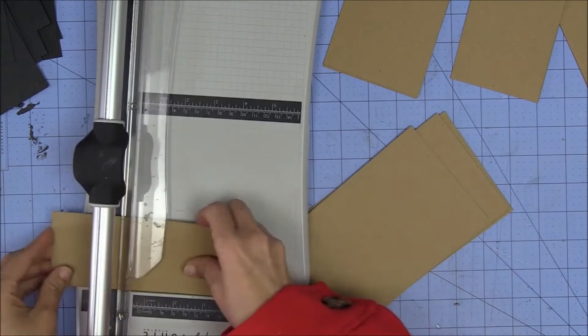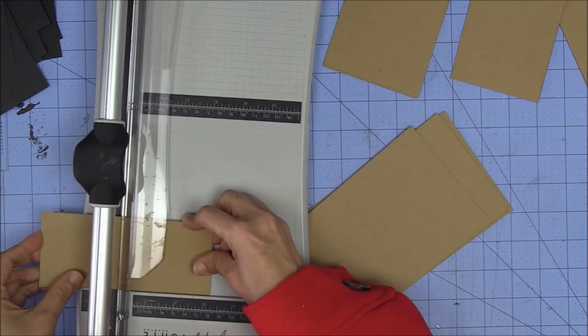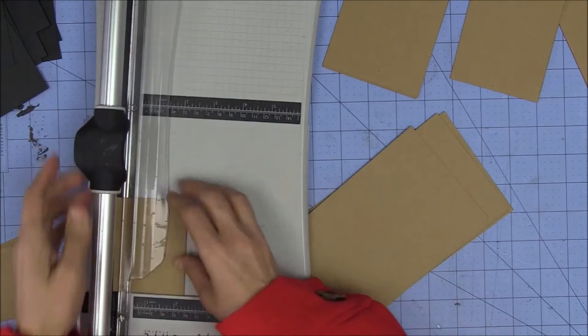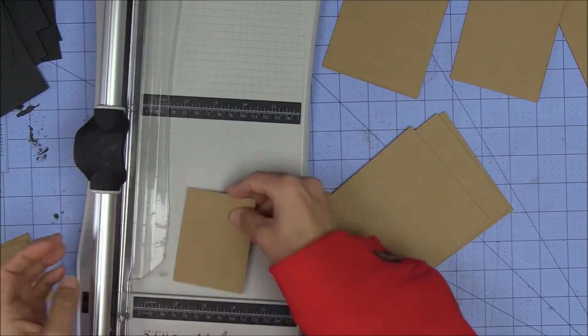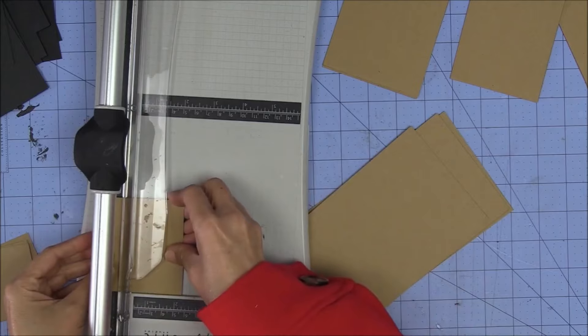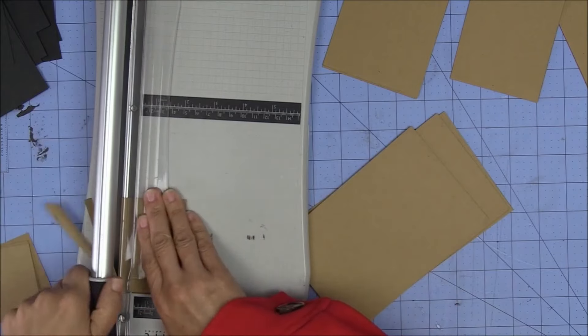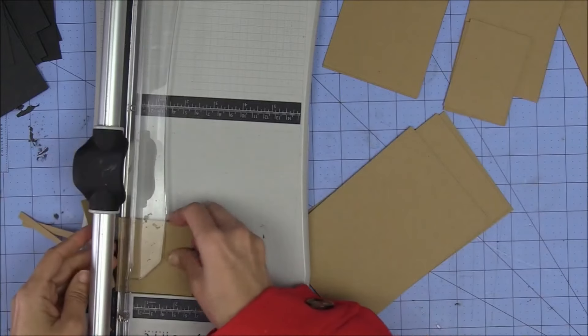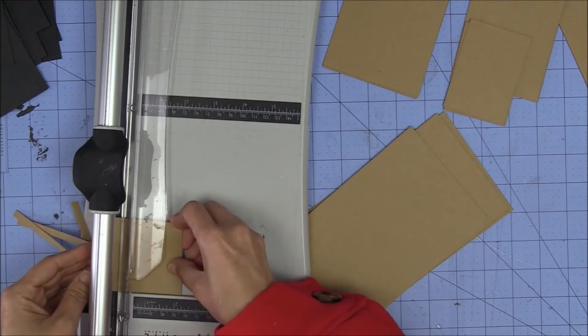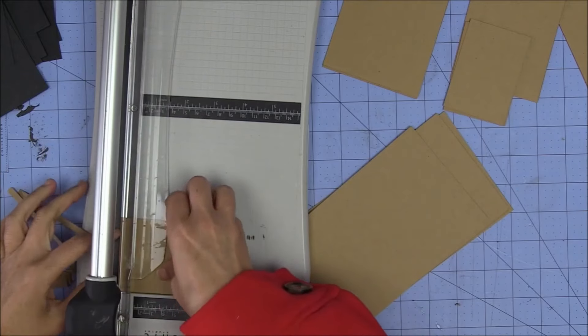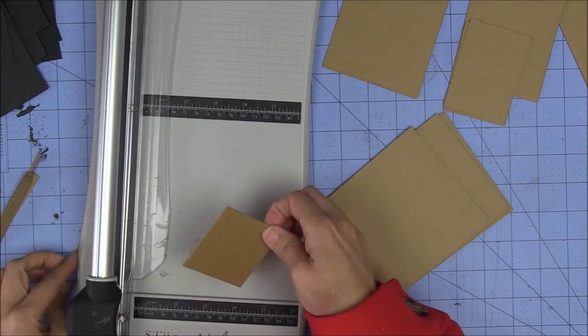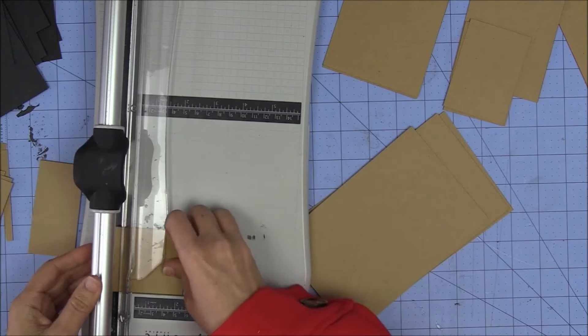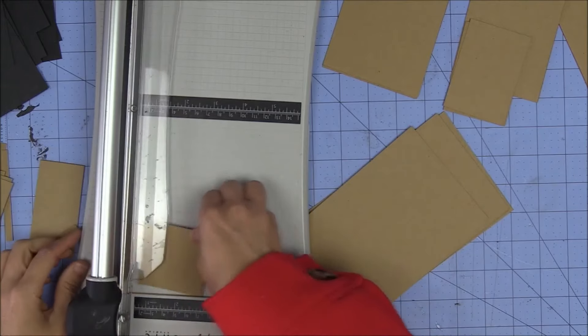This piece I'll cut down to 3 and a quarter by 2 and a quarter. And then this piece I'll cut at 3 and a quarter by 2 and a quarter. And you are left with nothing. Look at this. Alright? Those teeny weenie scraps, which makes my life very, very happy, guys. Very happy.